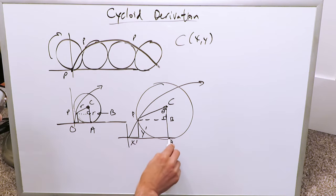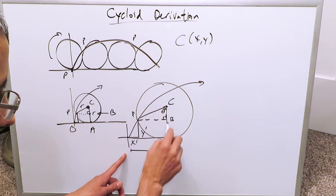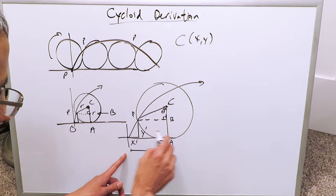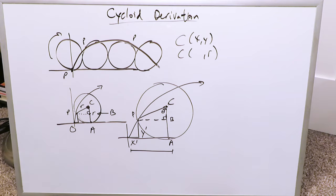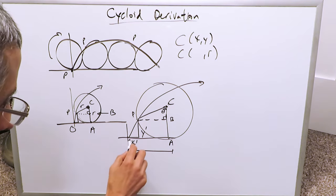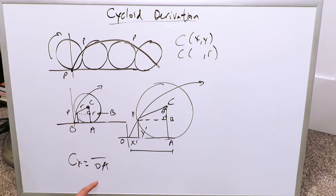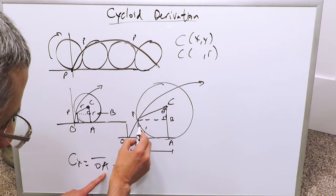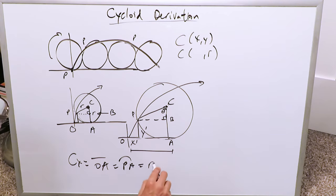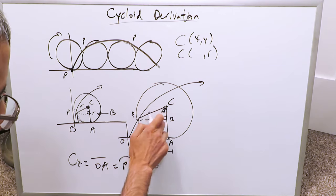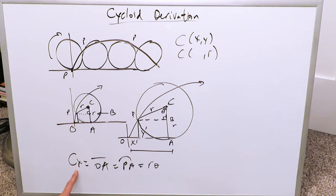Our first task is to determine the coordinate of the center C, which has coordinates (X, Y). Going from the origin to point A gives us the X value of the center. The Y value is the radius — the center sits at height r above the x-axis. For the X value of the center, it equals the length of segment OA, which equals arc PA. If you lay that arc flat, it equals OA, and arc PA equals r·theta — the arc length subtended by angle theta. So the center has coordinates (r·theta, r).